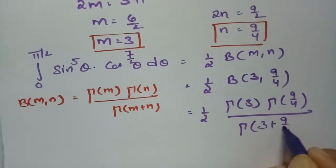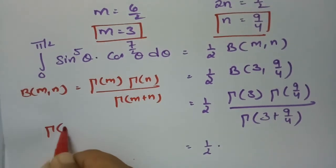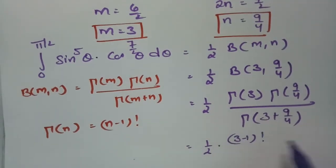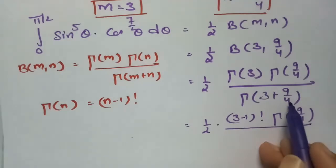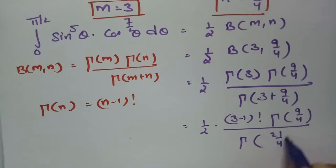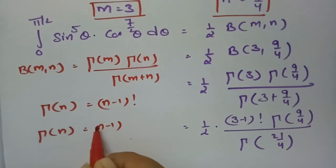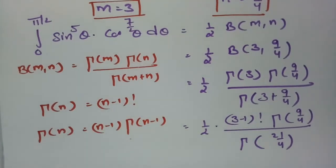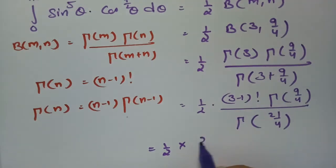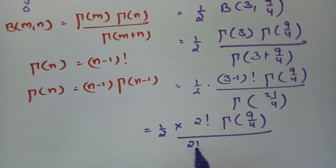Using the property gamma(n) = (n-1)!, we write gamma(3) = 2!. Taking the LCM of 3 + 9/4 gives (12 + 9)/4 = 21/4, so the denominator is gamma(21/4). Applying the property gamma(n) = (n-1)·gamma(n-1), we get one-half times 2! times gamma(9/4) divided by gamma(21/4), which expands as 21/4 times gamma(21/4 - 1).